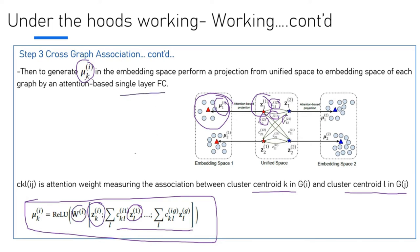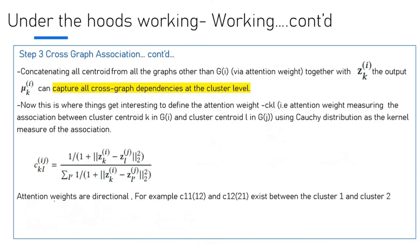Now we've reached a point where we've defined U_K(I). Moving forward, this is what we talked about in the previous slide: concatenating all centroids for all graphs over G(I), the attention together with Z_K. The output U_K can capture all the cross-dependency at cluster level. This is where things start getting interesting. The attention weight between cluster centroid K in G_I and cluster centroid L in G_J—we can use Cauchy distribution as a kernel to measure the association. Attention weights are directional by nature, so for example C_11_12 and C_11_21 are different.